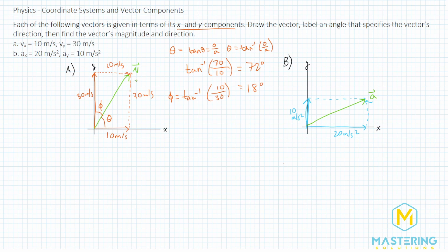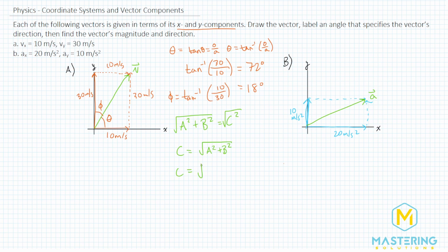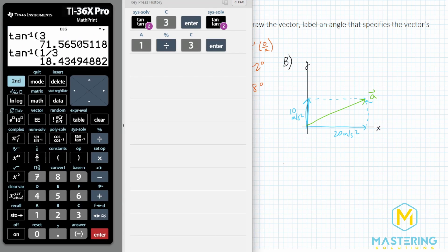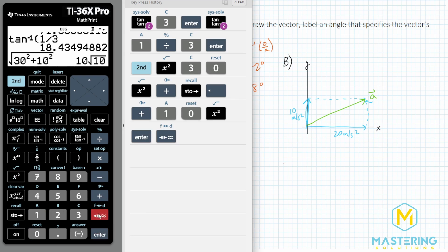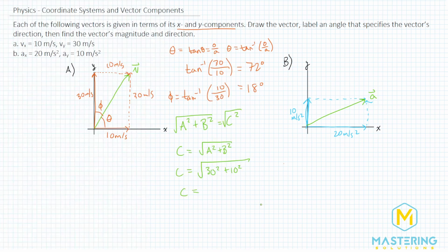Now we need to find the magnitude for the vector. We use the Pythagorean theorem: a squared plus b squared equals c squared. We're solving for c, the hypotenuse, so c equals the square root of a squared plus b squared. That gives us the square root of 30 squared plus 10 squared, which equals 10 root 10, or approximately 31.6 — we'll round that to 32 meters per second for the magnitude.